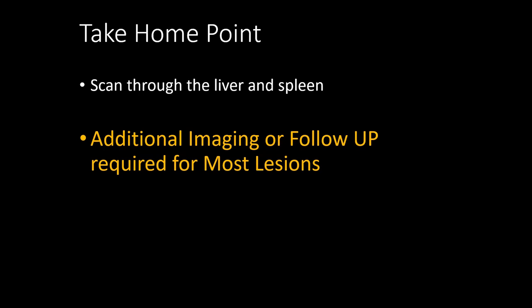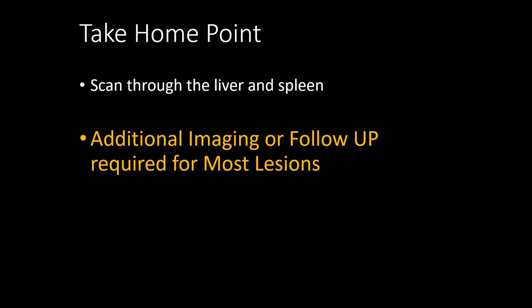The take-home point: whenever looking at gallbladders or doing FAST exams, take a look through the liver and spleen — you might find something that saves a life. If you see something unusual, get additional imaging or follow-up as required for most lesions, but also check prior imaging studies to see if the finding was there before, so you don't send patients for imaging they don't need. We covered the liver and spleen, looked at normal and abnormal findings, and developed a differential for what to do with those findings.